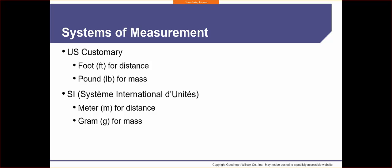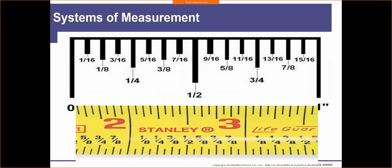The first thing I want to show you when we're talking about systems of measurement is how to read a tape measure. This is something you're going to use — if we're making ductwork, measuring out pieces of copper, how long do we cut? We want to be able to read what we see on a tape measure and communicate that. Our standard measurement is one inch on a tape measure, divided by long lines that break up each inch.